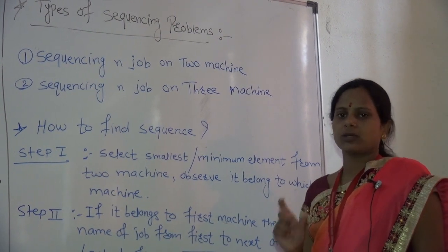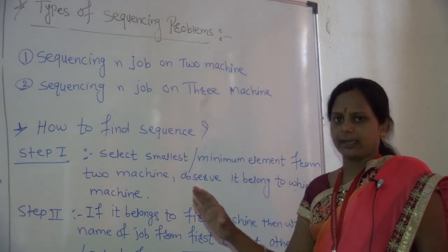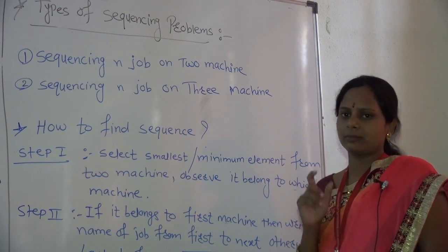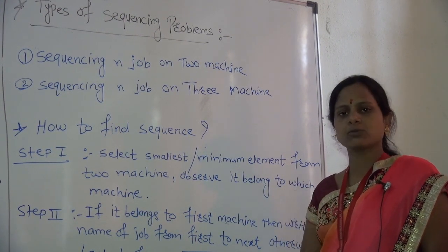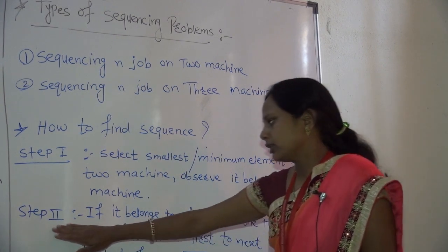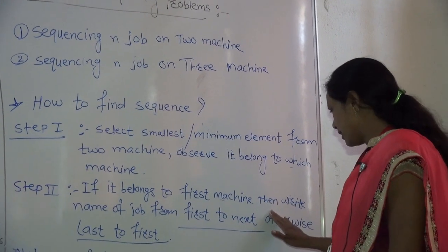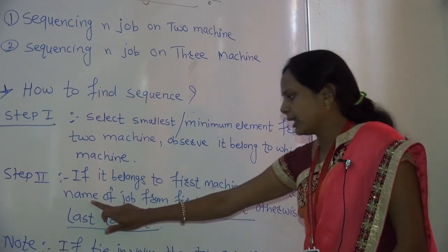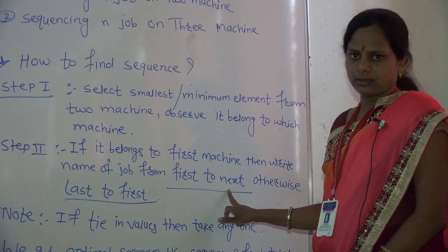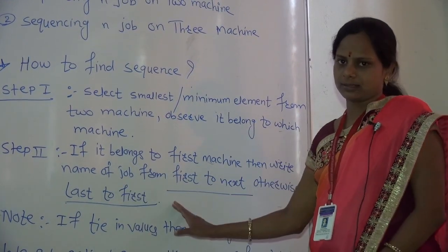Step one: select the smallest or minimum element from the two machines. Observe which machine it belongs to. From the timing given for all machines, observe and find which element is the smallest. If the smallest element belongs to the first machine, then write the name of that job from first to next (i.e., place it at the beginning of the sequence).